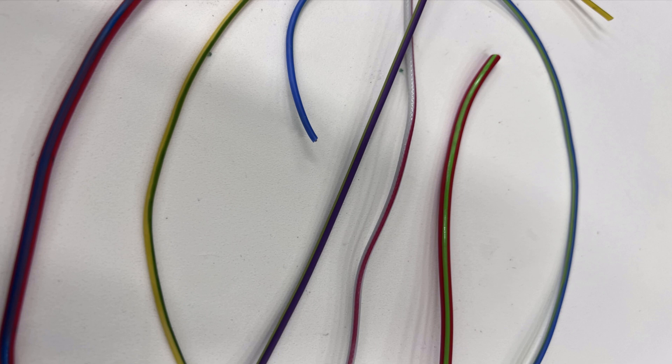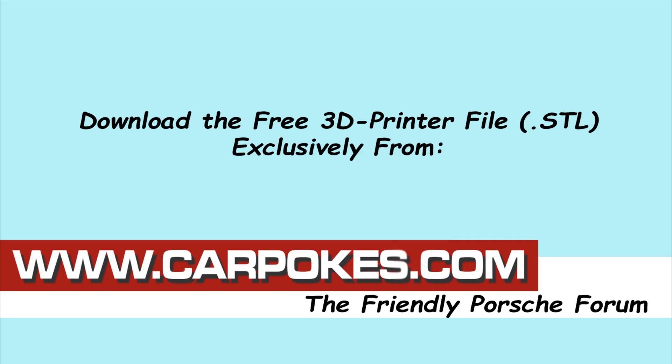Here's a bunch of wires I did. Some are paint pens and some are Sharpies. It really depends on how dark the wire is that you're trying to put the stripe on. The darker the wire, the more likely you'll need the paint pen in order to get good coverage. So that's it, I hope it helps. As always, you can download the tool, the 3D printer file for the tool, on carpokes.com for free.